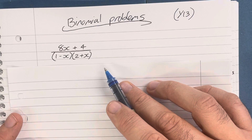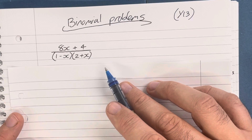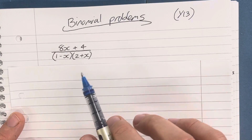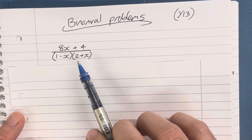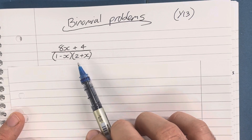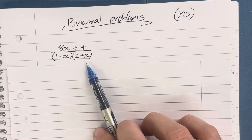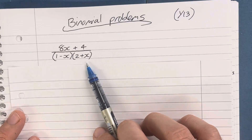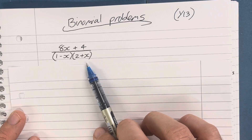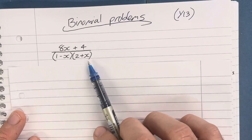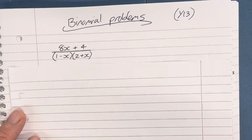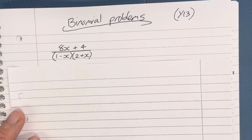This is the final video on binomial problems for year 13. At the end of the last video I left a problem with you on how to find the first few terms of a binomial expansion, and gave two different methods. I'm going to go through the solutions now.